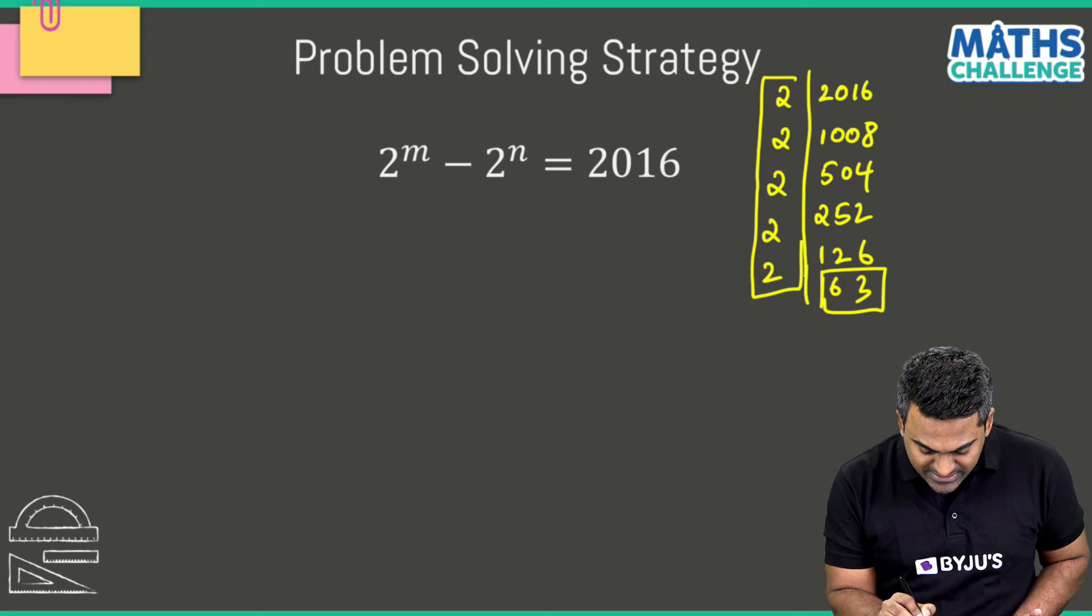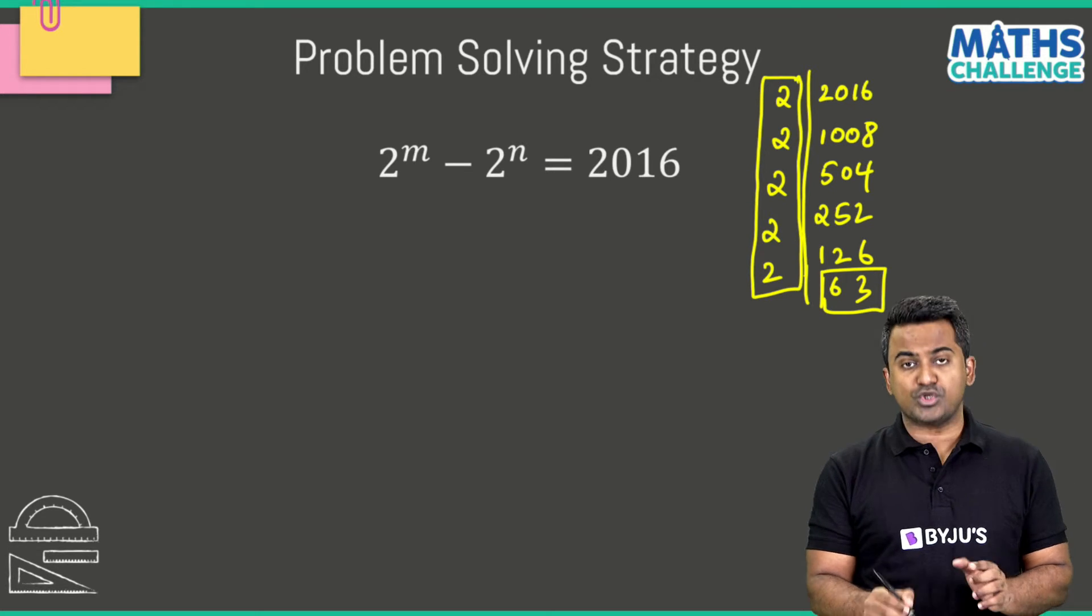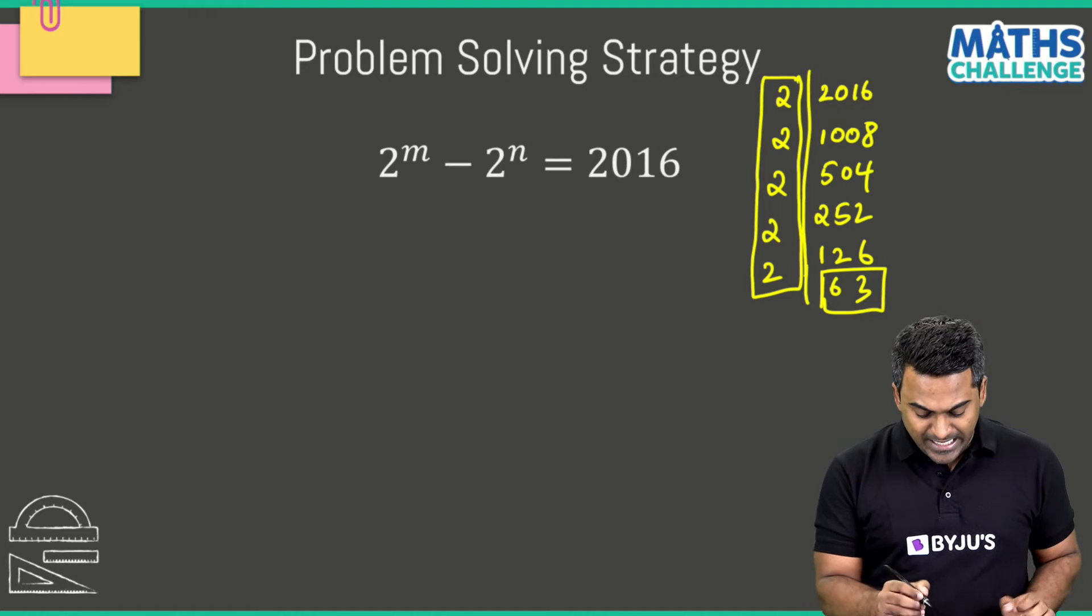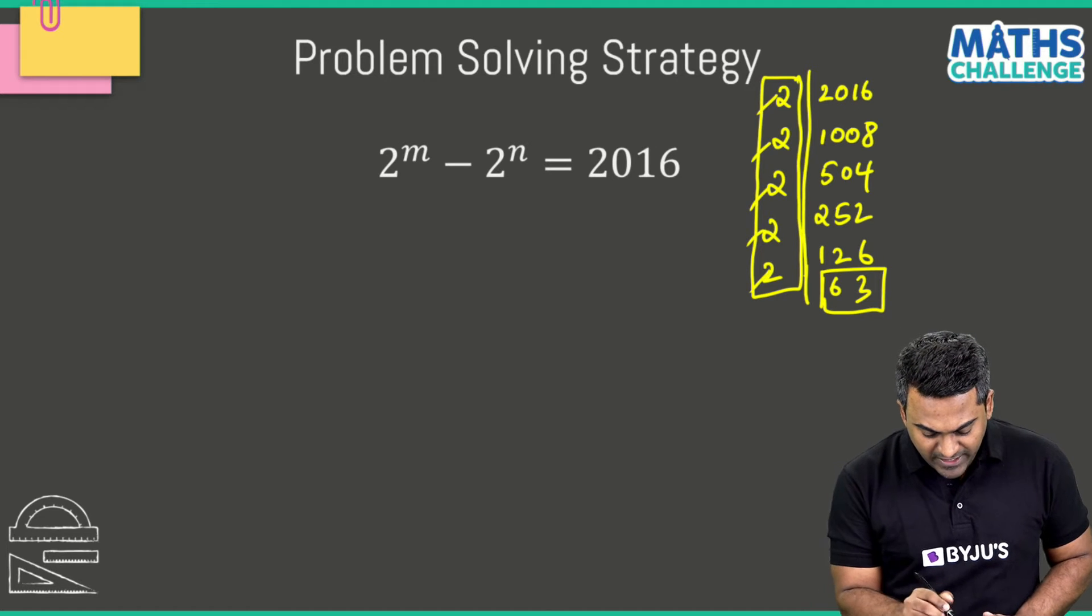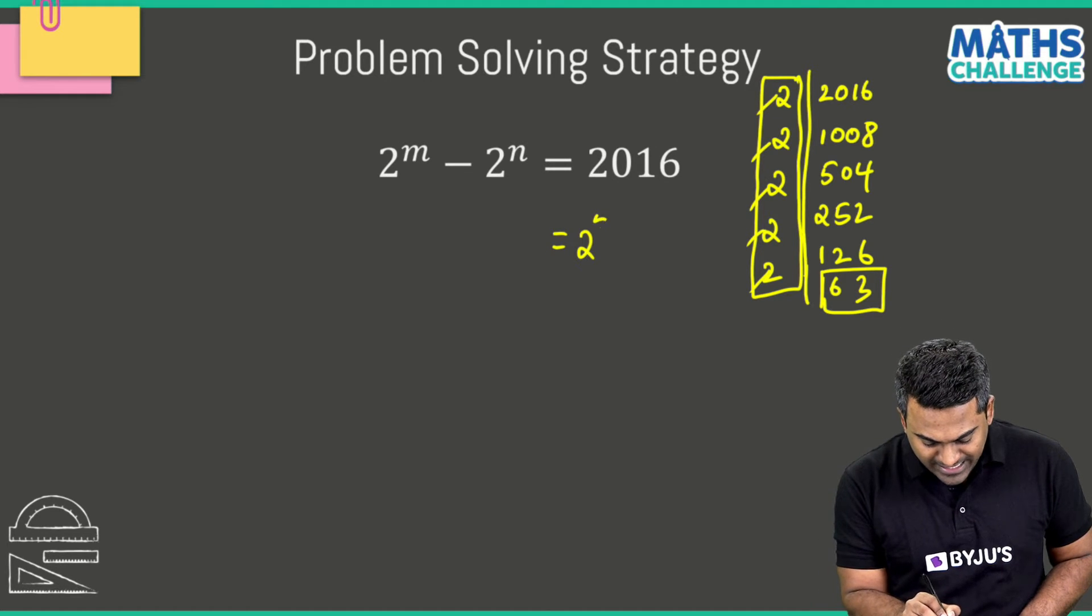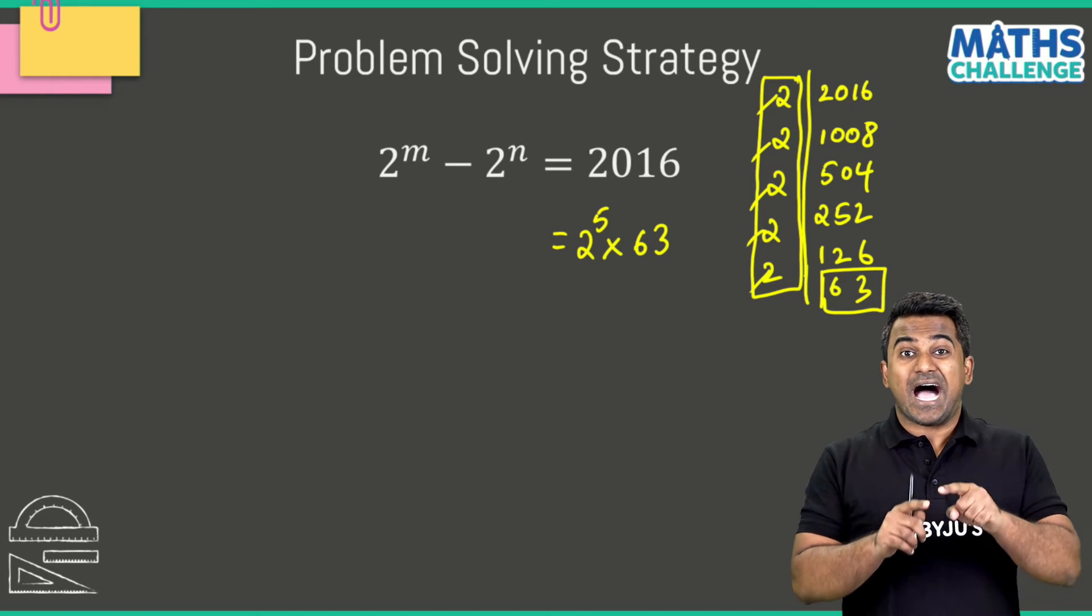126 divided by 2 is going to be 63. Now 63 is not divisible by 2, so I'm going to keep it as it is. I'm going to stop that here. So 2016 can be expressed as the product of these many 2s with 63, right? So how many 2s are there? 1, 2, 3, 4, 5.